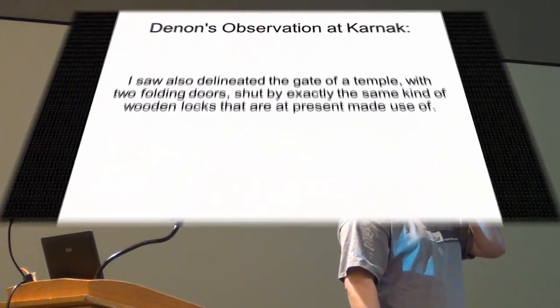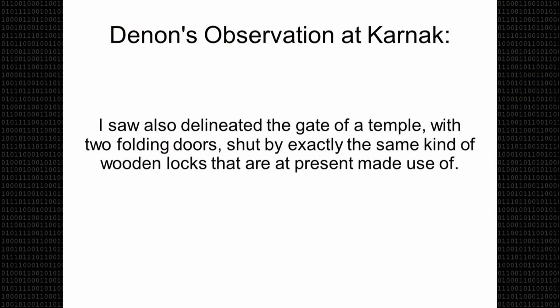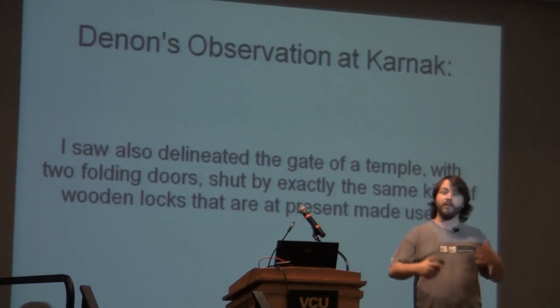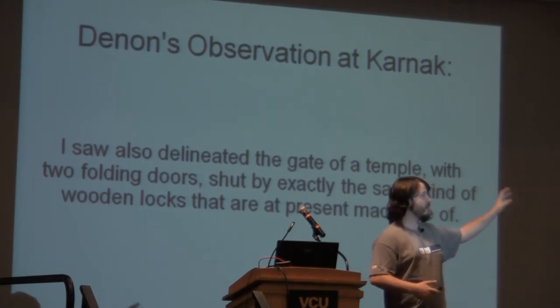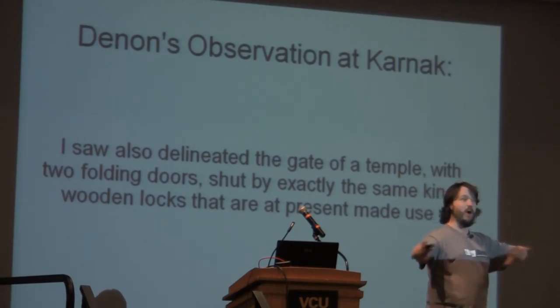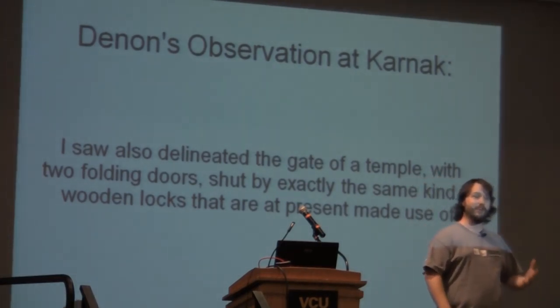At one point in Upper Egypt they're coming up on Karnak, this enormous series of ruins with Hypostyle Hall and pylons of Mut and all sorts of other now well-known relics from the Egyptian age. When they arrived, Denon was able to make some observations. From his memoirs: Issa also delineated the gate of the temple with two folding doors shut by exactly the same kind of wooden locks that are at present made use of.